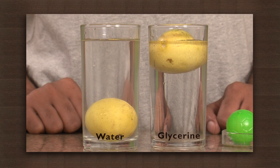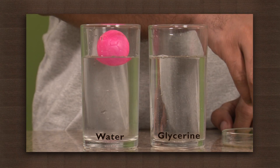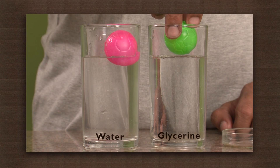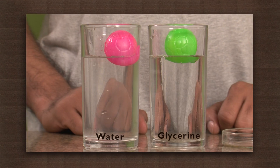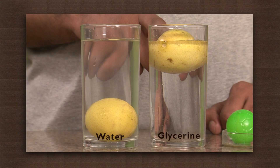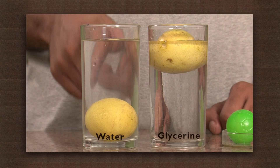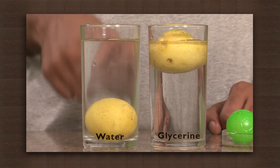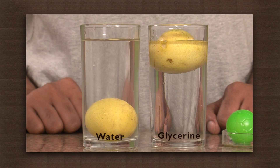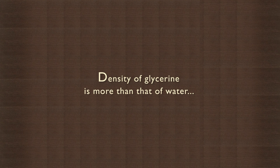From this experiment we can see that the density of the plastic ball is less than both water and glycerin. But the density of the lemon is more than that of water but less than that of glycerin. It thus shows us that the density of glycerin is more than that of water.